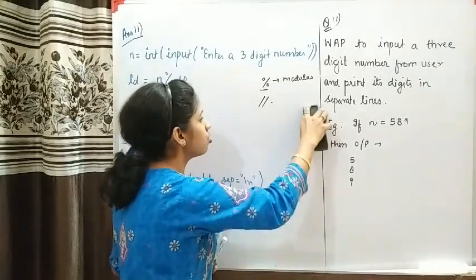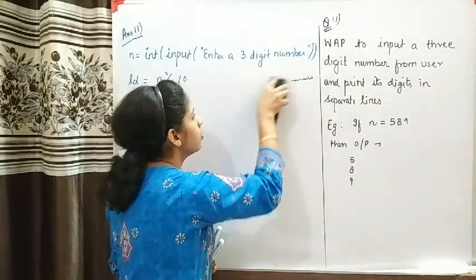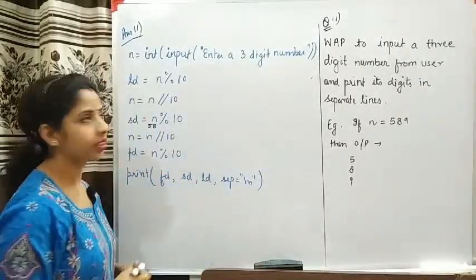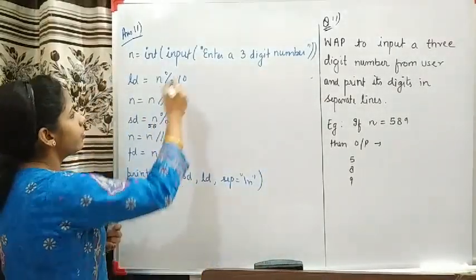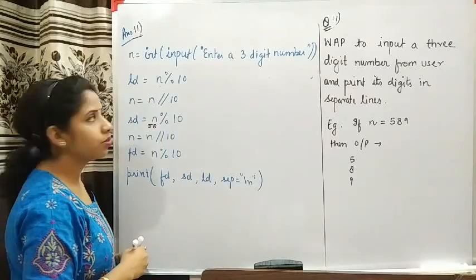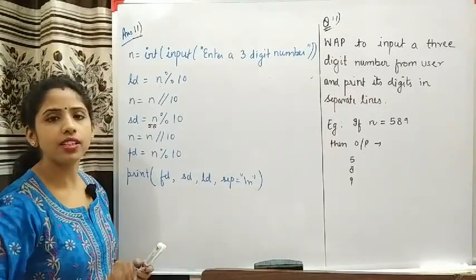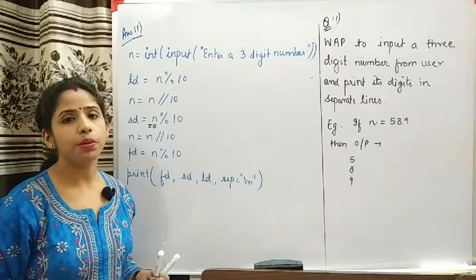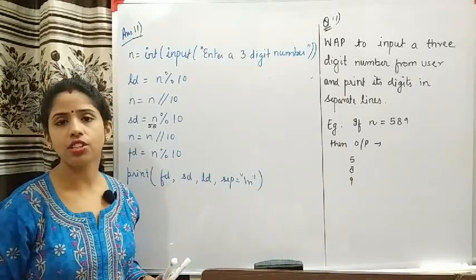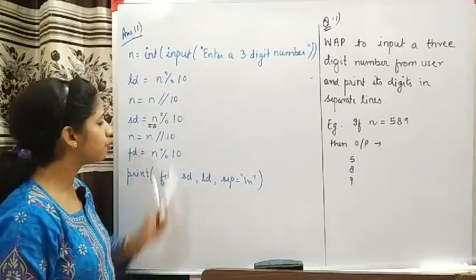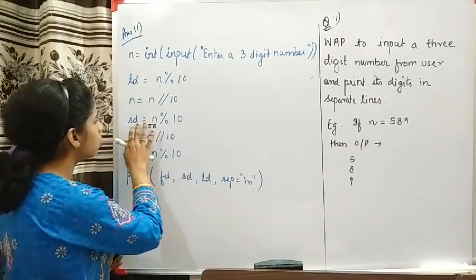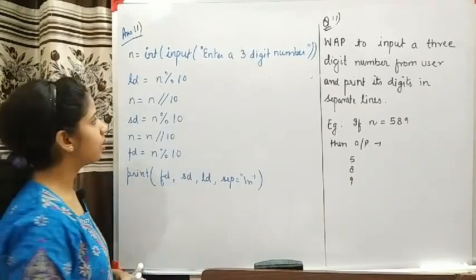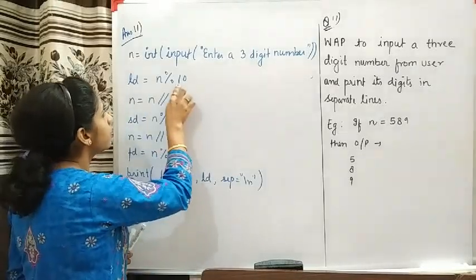You will study these two operators in detail when we discuss operators. Now, first of all, I have taken input of a number from the user and I am making sure that the user inputs a three-digit number only. If it has fewer than three digits or more than three digits, then this program will change the logic and we will not see the right output. So we are sticking to a three-digit number only.